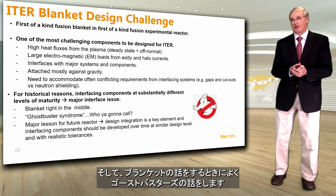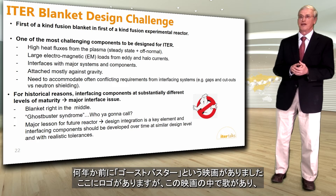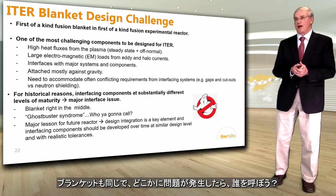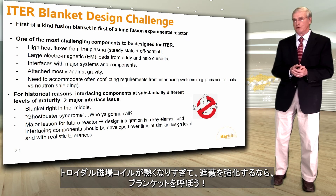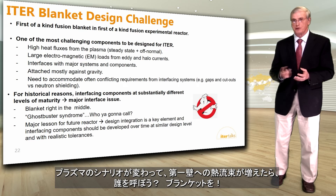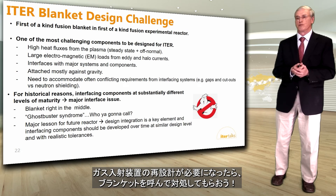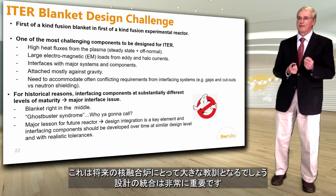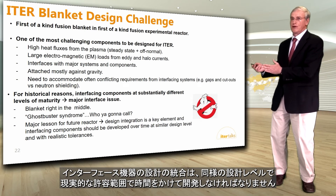We often refer to the 'Ghostbuster syndrome' when talking about the blanket. Like the Ghostbusters song — 'there's something strange in the neighborhood, who you gonna call?' — if there's a problem anywhere, the blanket gets called: if the toroidal field coils have too much heat you call the blanket to increase shielding; if a plasma scenario changes resulting in higher first-wall heat fluxes, you call the blanket; if the gas injection system needs reconfiguration, you call the blanket; same for diagnostics. This is a major lesson for future reactors: design integration of interfacing components should be developed at similar design levels and with realistic tolerances.